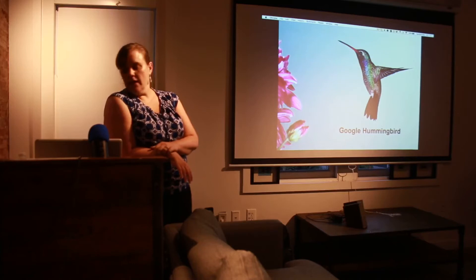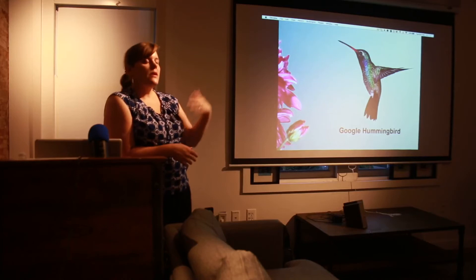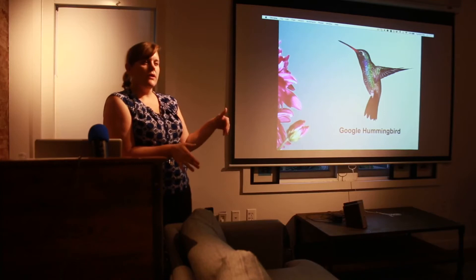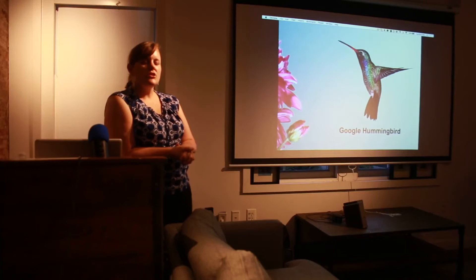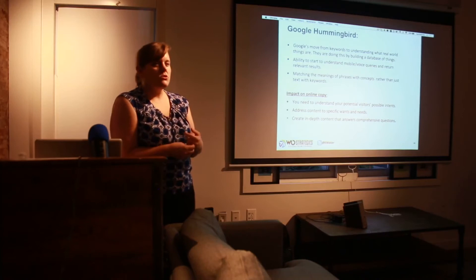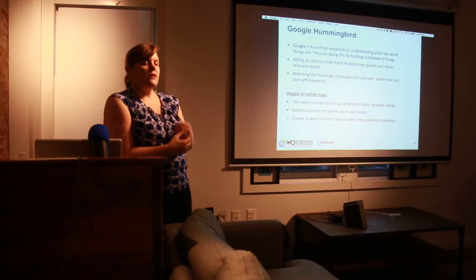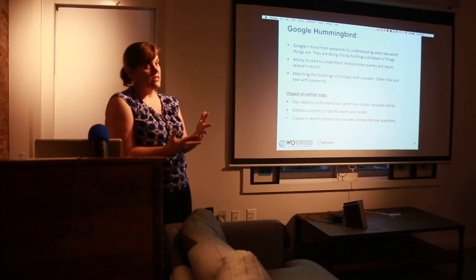So more animals — this is Hummingbird, and this is in chronological order. Hummingbird was basically a complete reworking of the Google algorithm, really focused around mobile search and understanding what we were actually meaning, not what we were literally saying. Because suddenly we're all talking to our phones and we're not always the most articulate. So they got really good at understanding that if I'm searching for 'hot dog' and I own a mixed lab, I'm probably looking for an overheated canine — not actually looking for a hot dog to eat.